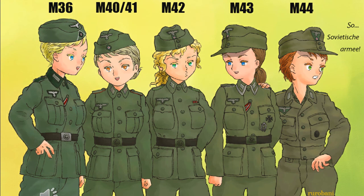For those interested in uniforms, this image provides a view of how the uniform changed during the war. The uniform appeared to get darker over time, with three main colours — M36 being the brightest and M44 being the darkest. The other main changes were the M43 hat and the short M44 jacket, along with a wide range of other changes visible if you look at the image closely.